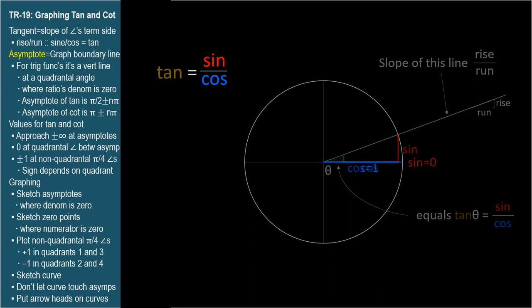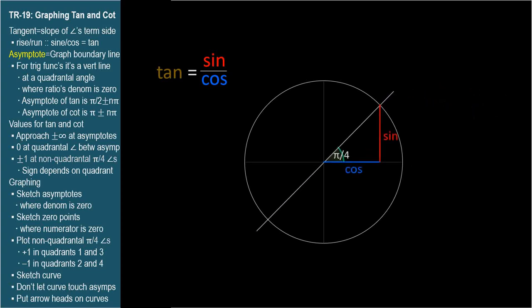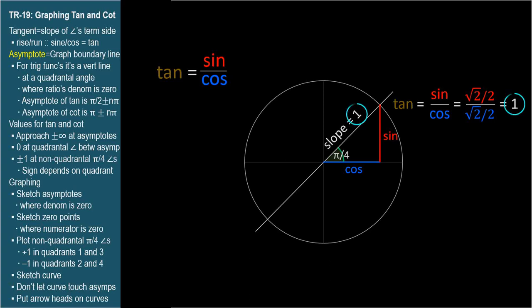Since tangent is sine over cosine, it will be zero where the sine is zero. The sine is zero at angle zero, and indeed, this horizontal line has a slope of zero. Tangent will be one where the sine and cosine are equal to each other. This happens at pi over four radians, where they're both square root of two over two. So tangent of pi over four is one, and the slope of the terminal side of pi over four radians is also one.